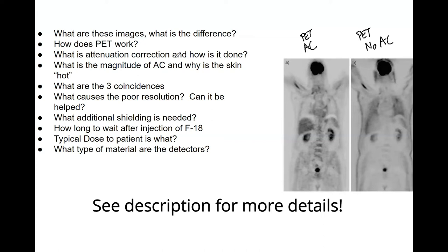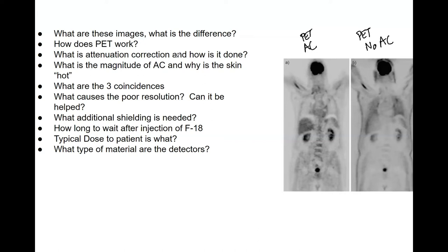CTs can help with differential attenuation along the path of annihilation but certainly aren't always used. PET-CTs are very nice to have, but PETs can also work when you fuse them with CTs in the clinic.